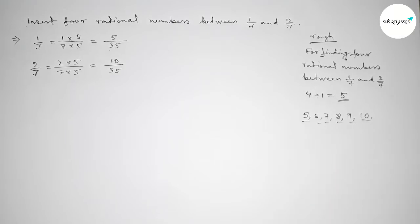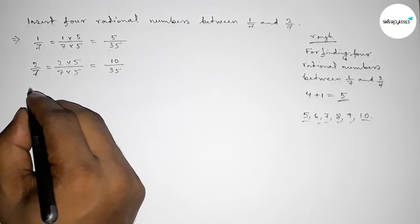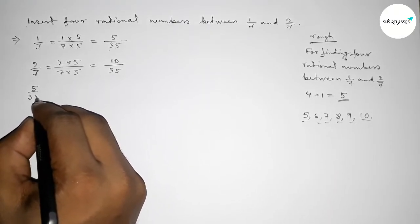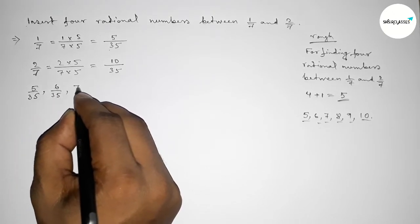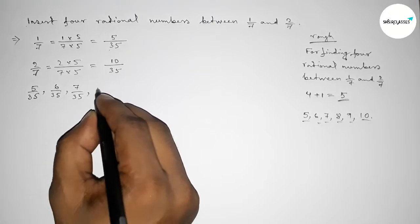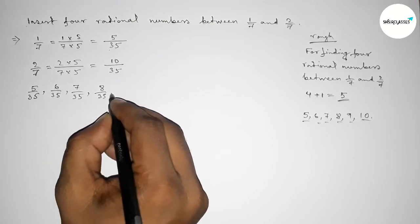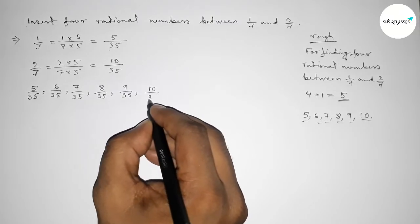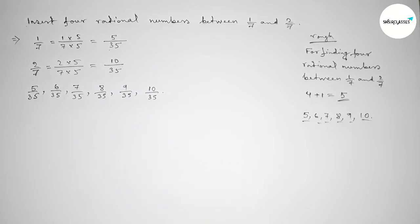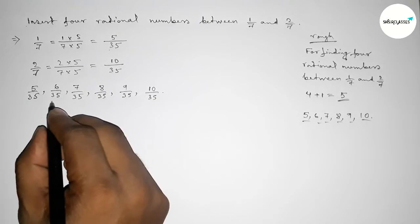Now between 5 to 10 we can get four natural numbers. So now first write down here all the rational numbers: first one 5 over 35, then 6 over 35, 7 over 35, 8 over 35, 9 over 35, 10 over 35.